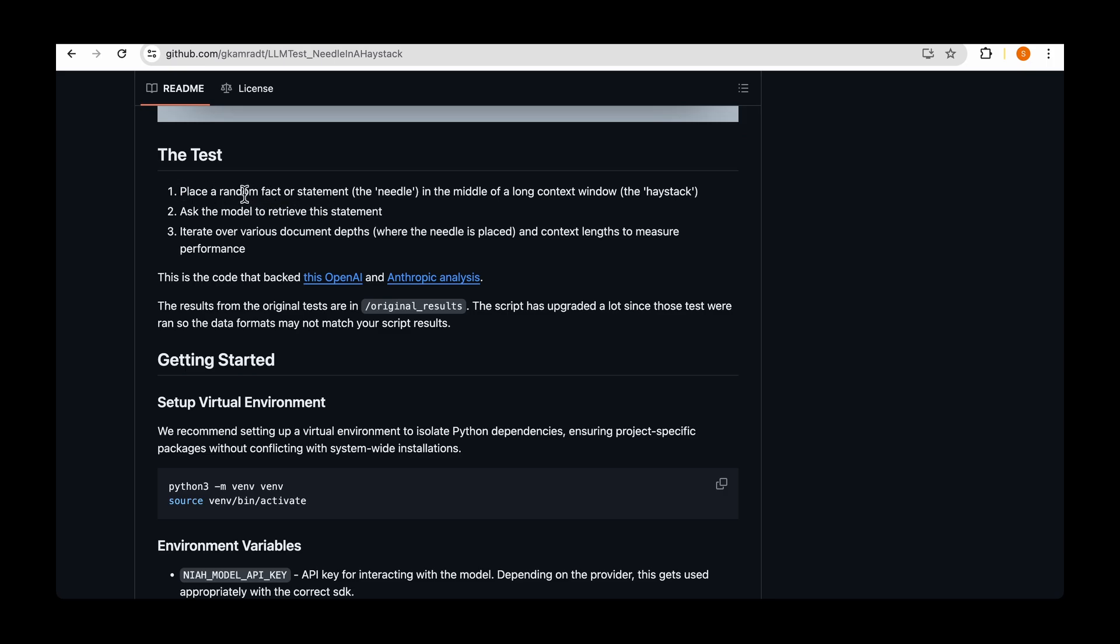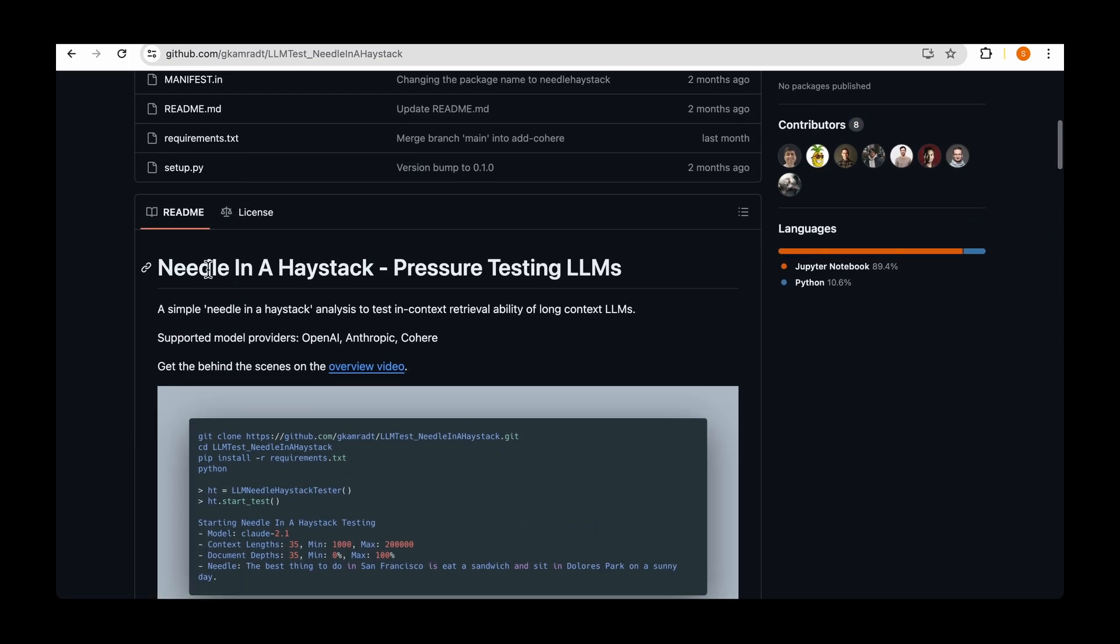And the test consists of three steps. First step is to place a random fact or statement in the middle of a long context window. So the statement becomes a needle and the long context becomes the haystack. Ask the model to retrieve the statement is the second step. And the third step is to iterate over various document lengths and context lengths to measure the performance of the model. So this is the typical three-step process that's followed by this repository needle in a haystack in order to test the long context LLMs.